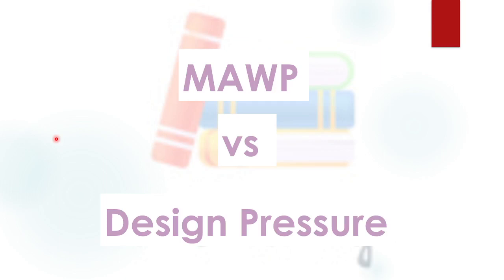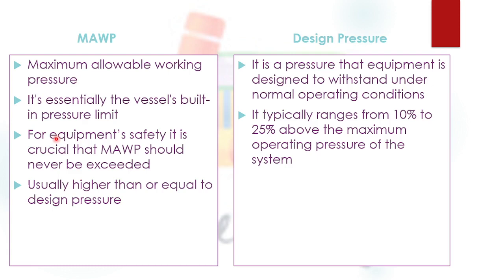Hello and welcome to my YouTube channel E-Learning Arena. I'm your host, process engineer Syed Waqas Haider. In today's video I'm going to talk about MAWP and design pressure. MAWP stands for Maximum Allowable Working Pressure. Design pressure, on the other hand, is the maximum pressure that equipment can withstand under normal conditions. Maximum allowable working pressure is actually the built-in maximum pressure limit.